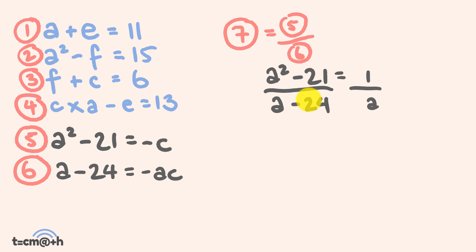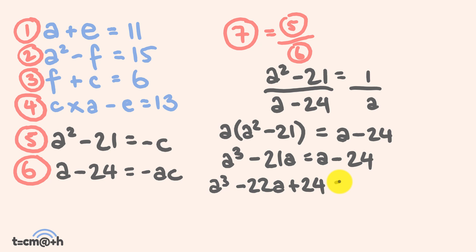The next thing we're going to do is a bit of cross multiplication. We're going to multiply this entire amount by a and this entire amount by 1. We're going to get a multiplied by a² - 21, and this is going to equal a - 24. Now let's expand these brackets. a times a² is a³, 21 times a is 21a, and this equals a - 24. To solve this, let's put everything on the left-hand side. We get a³ - 22a + 24 = 0.